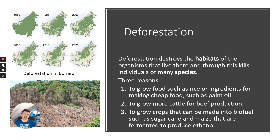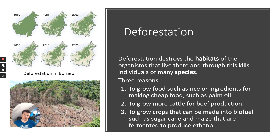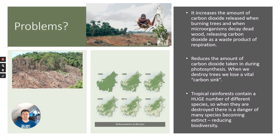There are reasons why deforestation is happening: to grow staple food crops such as rice, one of the most important staple foods in the world; to grow ingredients for cheap processed foods such as palm oil; to raise more cattle for beef production in deforested areas; and to grow crops for biofuel, for example sugarcane and maize can be fermented to produce ethanol.